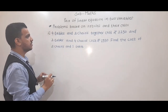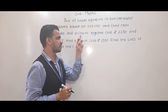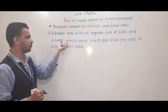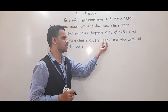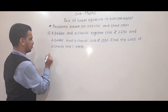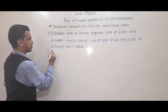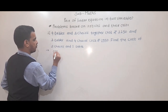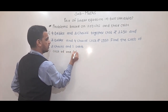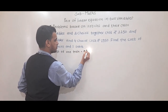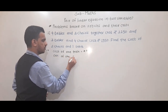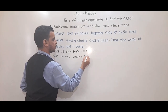The first problem: 4 tables and 3 chairs together cost rupees 2250, and 3 tables and 4 chairs cost rupees 1950. Find the cost of 2 chairs and 1 table. We suppose that cost of 1 table is equal to x rupees and cost of 1 chair is equal to y rupees.